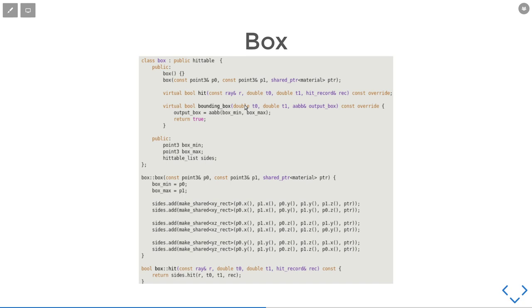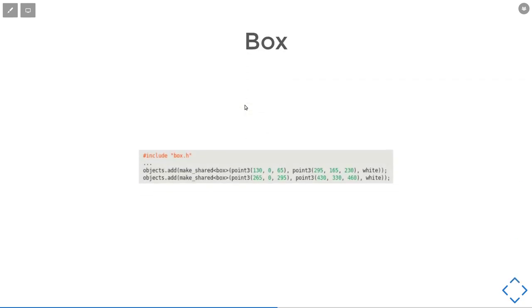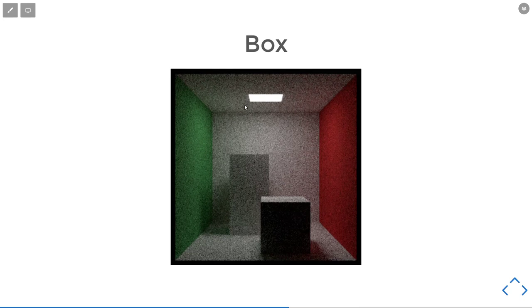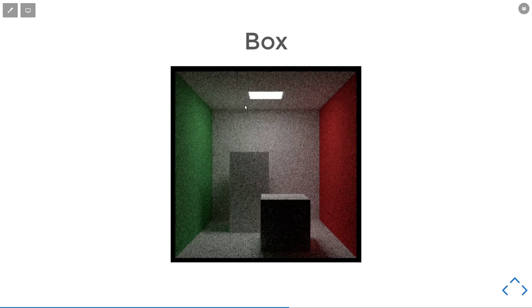For the box, because in the current Cornell Box we missed the two boxes in the middle, we just need six axis-aligned rectangles in the three different axes. Then we can just add the box to the scene and we will have this image.